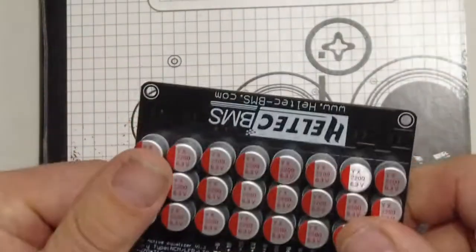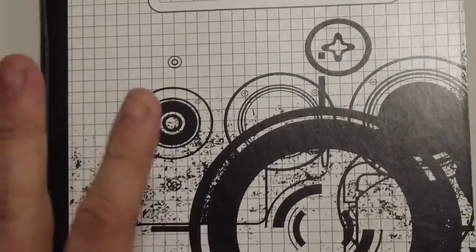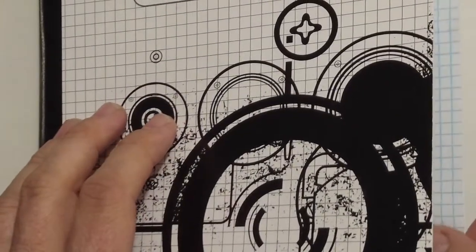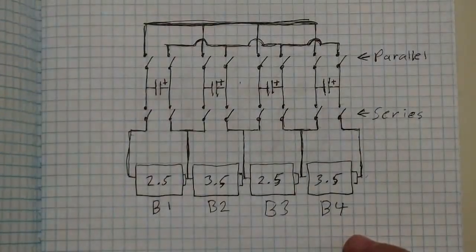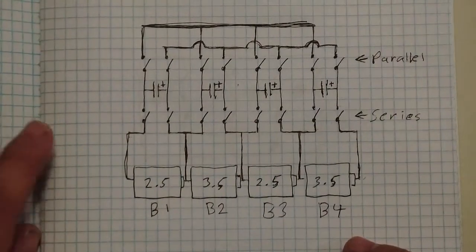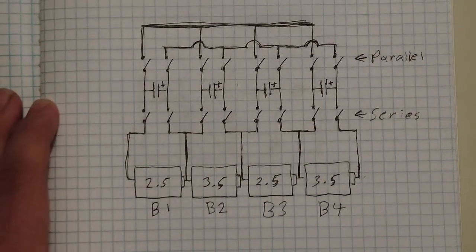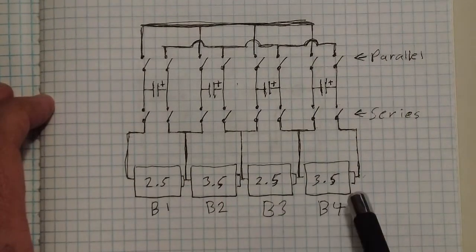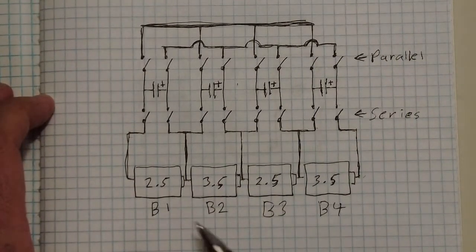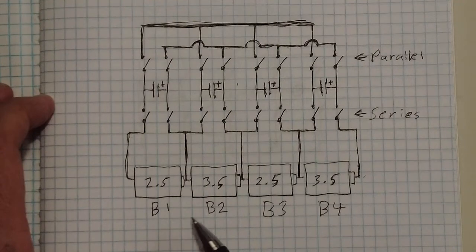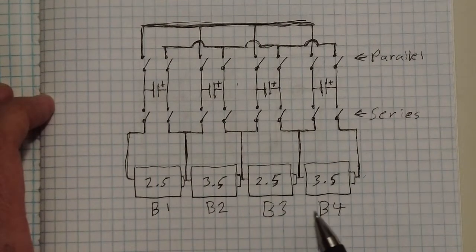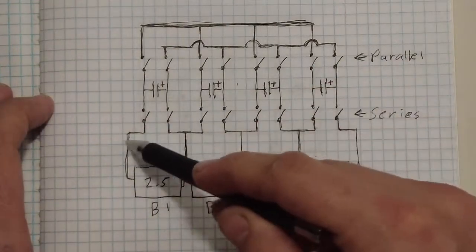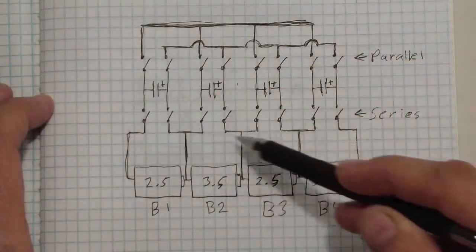So let's take a look at the schematic. I just drew up a very simplified schematic so you can see it and understand. So here it is in the simplest form. I did a 4S. So here's your battery cells one through four.